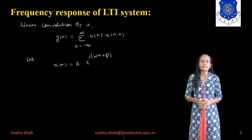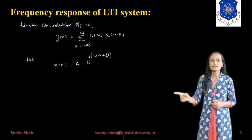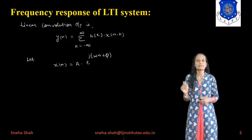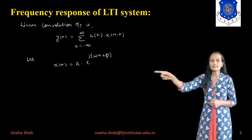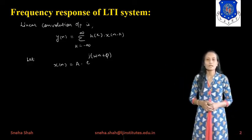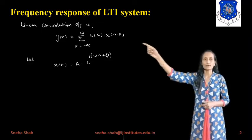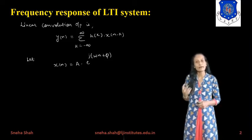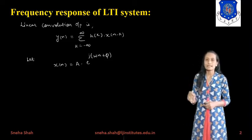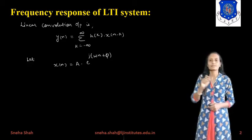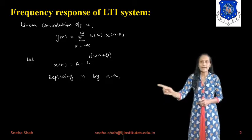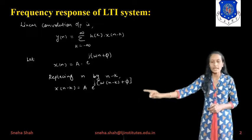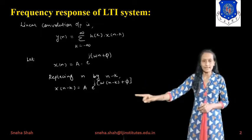Now if we take x(n) = a * e^(j*omega*n + 5), representing x(n) in polar form. We require the value of x(n-k), so instead of n we put n-k. So x(n-k) = a * e^(j*omega*(n-k) + 5), replacing n by n-k.